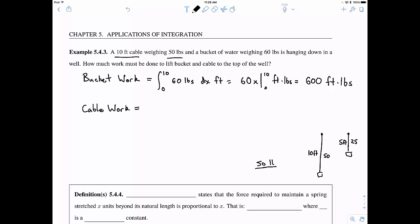And so what I want to think of is 50 pounds per 10 feet. So that's going to be 5 pounds per foot. So for each foot that I lift up, it's going to weigh 5 pounds less. And it initially starts at 50 pounds. So this is going to be the integral of 50 minus 5x, because if I plug in 0 for x, I'd get out 50. If I plugged in 1, I would get out 45, so on and so forth.